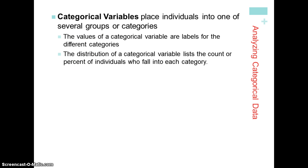We know that categorical variables place individuals into different groups or categories. For example, if we're categorizing M&Ms, one categorical variable that we may use is color. The different values that the variable color can take on may be red, yellow, orange, blue, brown — and the counts or the percents of the frequency of each one of those colors is going to give us the distribution of the categorical variable.